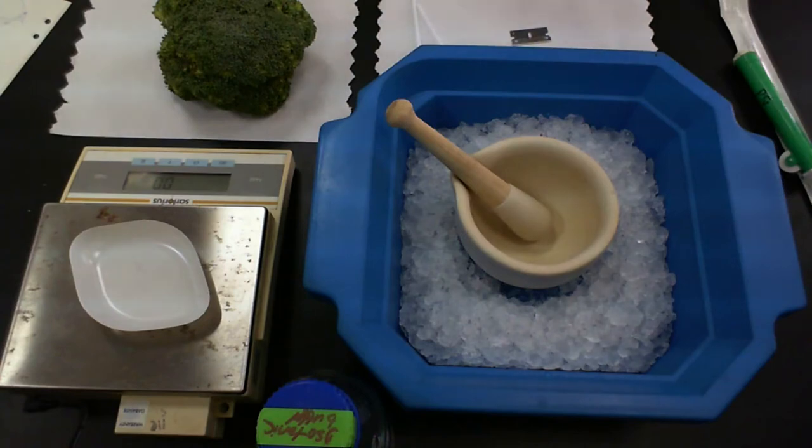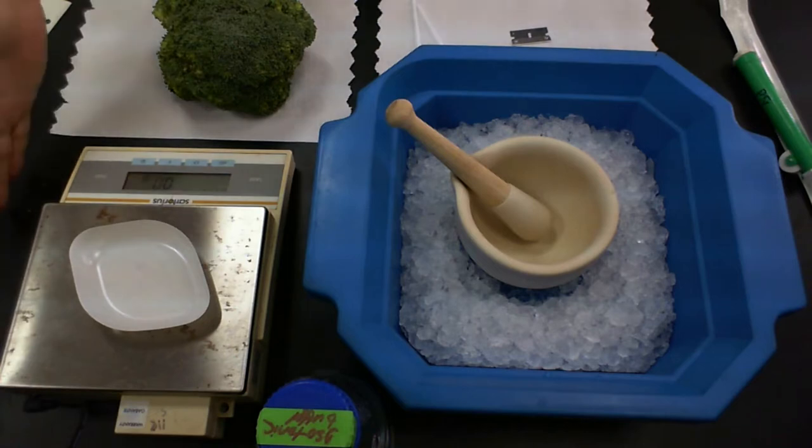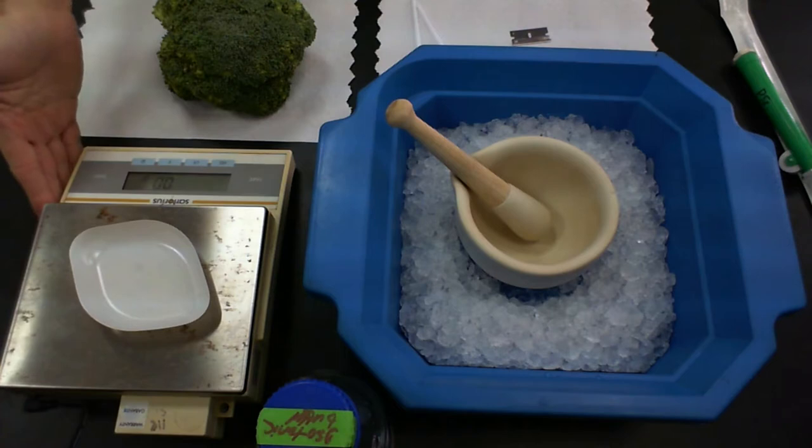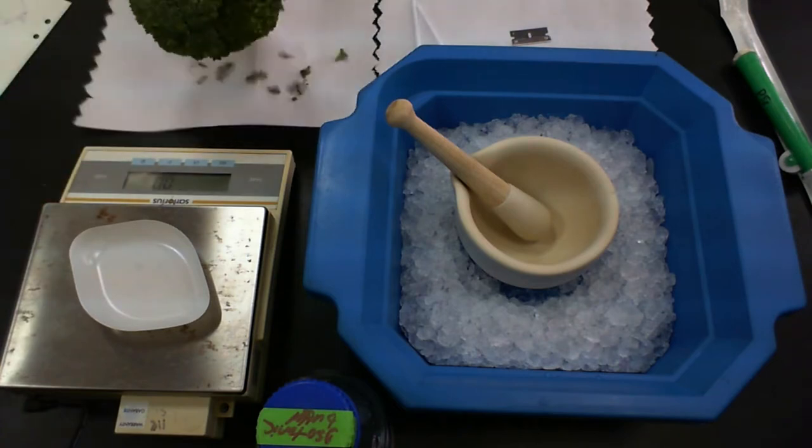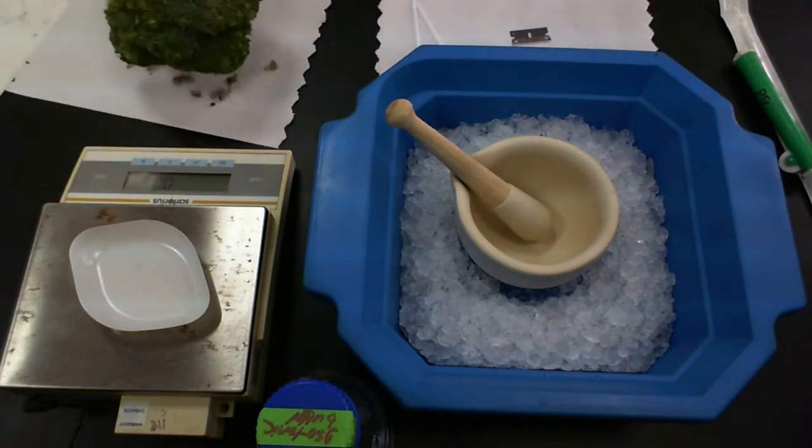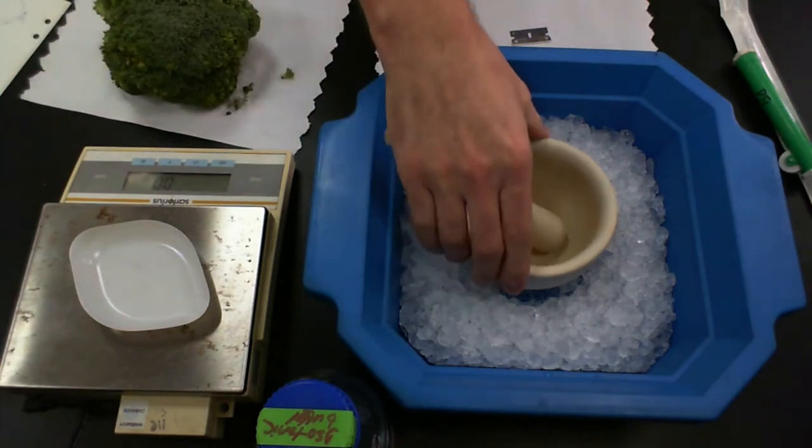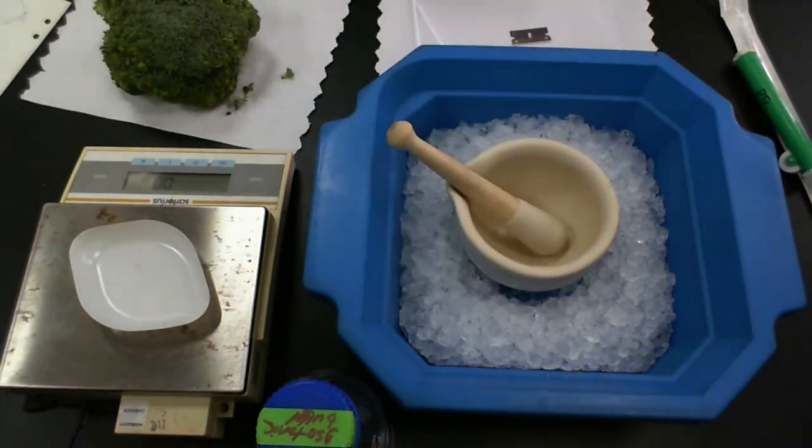Okay, so here we are. What we have in front of me is a scale, so I can weigh out the appropriate amount of my broccoli. I have my sample, this is my broccoli here, and I have a mortar and pestle sitting on ice, so it's nice and cold.